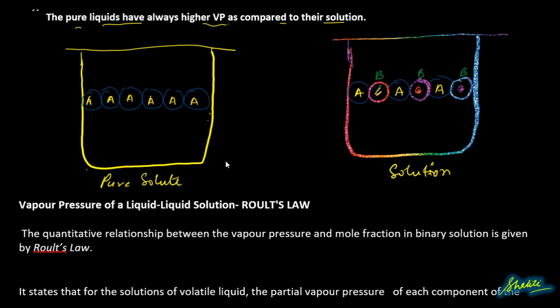Pure liquids always have higher vapor pressure as compared to their solutions. For example, if we take a pure liquid, the vapor pressure is high because this liquid is only one type of liquid — it is pure, and vapor pressure is high.